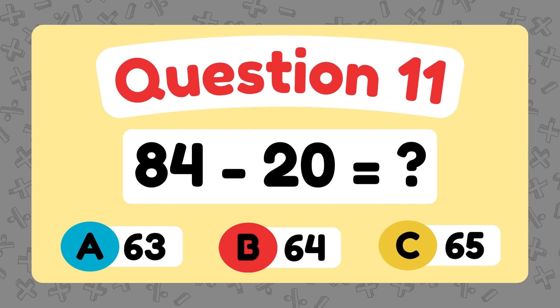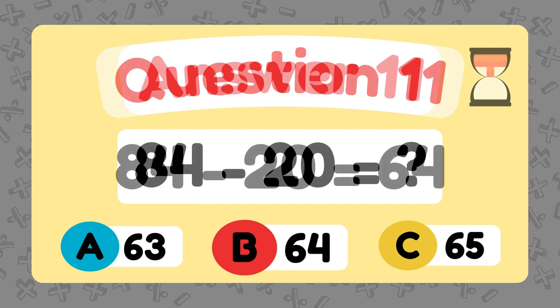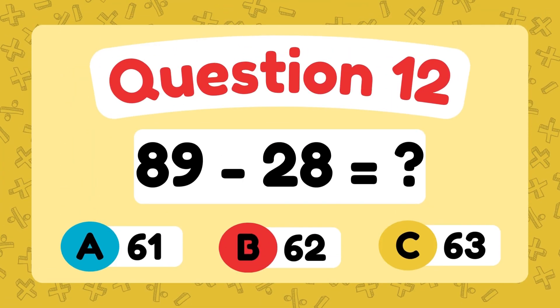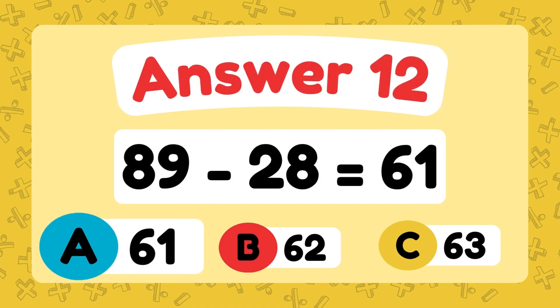What is 84 minus 20? The answer is 64. What is 89 minus 28? The answer is 61.